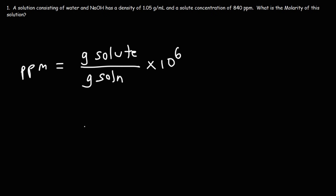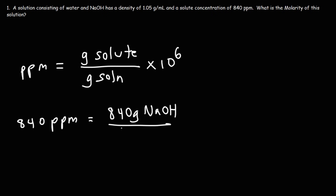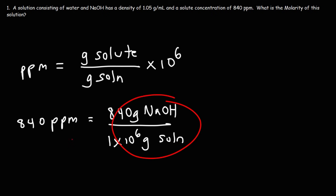In this example, we have a solution concentration of 840 parts per million. We can represent this in terms of grams of solute with respect to grams of solution. 840 parts per million is equal to 840 grams of solute — in this case the solute is sodium hydroxide — divided by one million, or 10 to the 6, grams of solution.